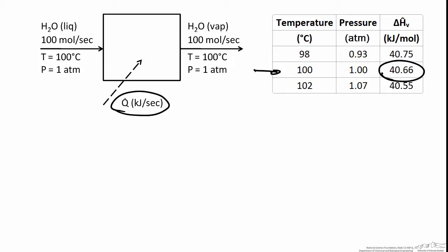To calculate the latent heat, we start with the open system energy balance. In this case it reduces to Q equals delta H, assuming no work and neglecting changes in kinetic and potential energy. Since the heat of vaporization is given on a per-mole basis, we rewrite the energy balance as Q equals N-dot — the molar flow rate — times the specific enthalpy change, which in this case is the heat of vaporization.